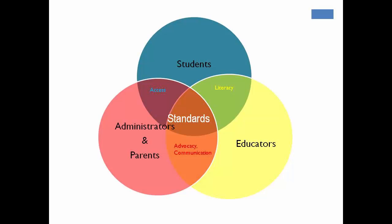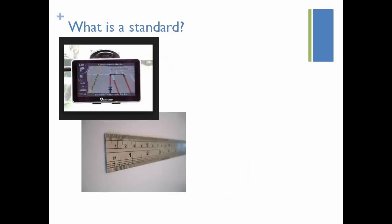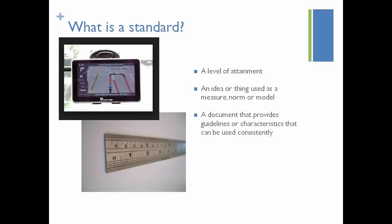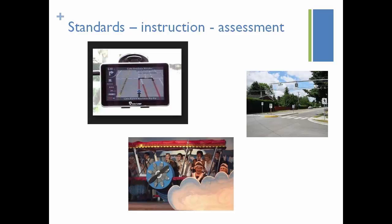Thinking about what is a standard — a standard is an important intersection. It creates that intersection between educators, administrators, parents, and students. Standards serve as the basis for literacy in the arts, pave the way for access to an arts education, support advocacy, and communicate what students should know and do across a sequential arts education. According to Google, a standard is a level of attainment, an idea or thing used as a measure, norm, or model, a document that provides guidelines or characteristics to be used consistently, and finally, a directional device or a roadmap.